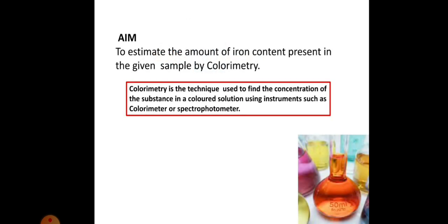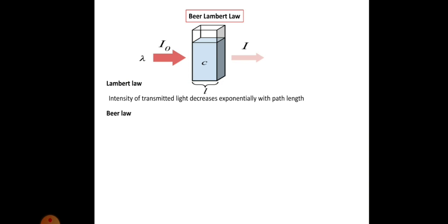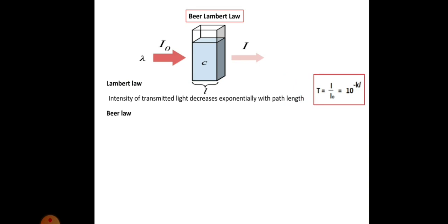According to Lambert's Law, the intensity of transmitted light decreases exponentially with path length. Transmittance T is expressed as: T = I/I₀ = 10^(−KL), where K is a constant and L is the path length.